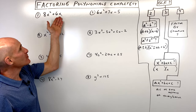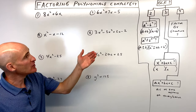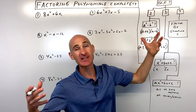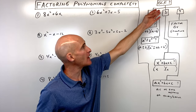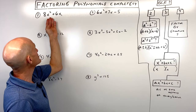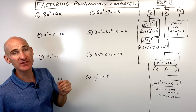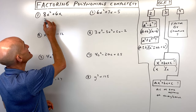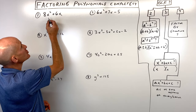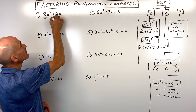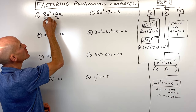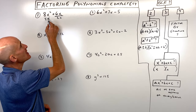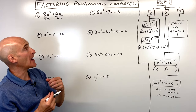We've got 8x squared plus 6x. The first thing you want to do in this decision tree is ask yourself: is there a greatest common factor? That's the most important thing in factoring — you always want to do that first. Ask yourself, is there something I can divide out of all the terms? Remember, the terms are separated by plus or minus. When I look at this, I can see that both of these terms are divisible by 2. You could also divide out 1x — there's x squared, that's x times x, and here we just have 1x.